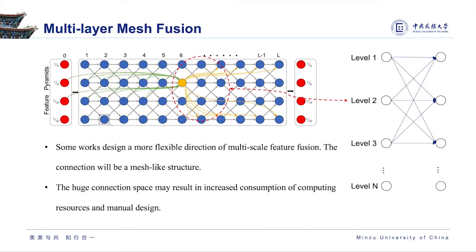Different from the above, some works design a more flexible direction of multi-scale feature fusion. The connections form a mesh-like structure, but this large connection space may result in increased consumption of computing resources and manual design effort. Recent work uses neural architecture search to overcome this challenge.